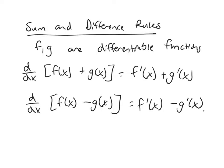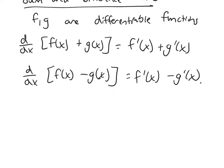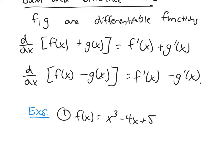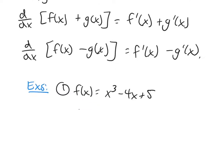This is nice because we've been looking at simple functions with only one term. Now we can expand. Let's say my function is x cubed minus 4x plus 5. What would the derivative be? You just work term by term. Starting with x cubed, using the power rule, you get 3x squared. Then minus 4x gives minus 4. And this constant 5 — the derivative of a constant is 0. So the derivative is 3x squared minus 4.